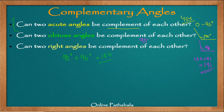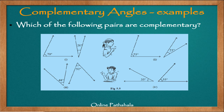Now let us look at a few problems. Which of the following pairs are complementary? To solve this we apply the criteria: angle X plus angle Y, if it is equal to 90 degrees, that is our criteria — then angle X and angle Y form a complementary pair. In the first example we have 70 degrees and 20 degrees. When I add them: 70 plus 20, which is equal to 90 degrees. Therefore angle A and angle B are complementary angles — yes.